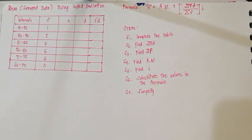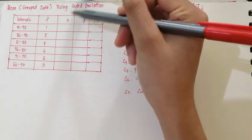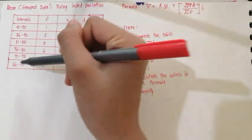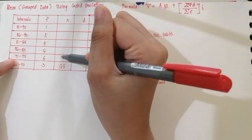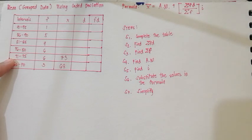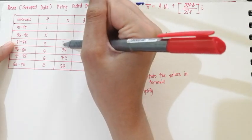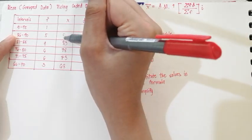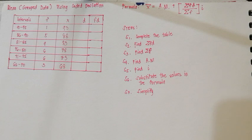Let's proceed to our second example, which uses the same second table as before. Step 1: complete the table. Let's find the class marks first. The class mark of 66 to 70 is 68. 71 to 75, the class mark is 73. 76 to 80, it's 78. 81 to 85, it's 83. 86 to 90, it's 88. And 91 to 95, it's 93. We are done with the class marks.